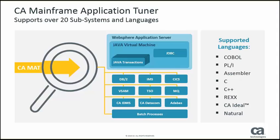CA MAT supports over 20 different subsystems and languages in ZOS-based environments — traditional CICS regions, IMS regions, DB2, IDMS, VSAM, and COBOL calls. Whatever ZOS-based subsystem your application is using, MAT is going to be able to observe it, report on it, and tell you specifically where in your application you're making that call to that particular subsystem or language.